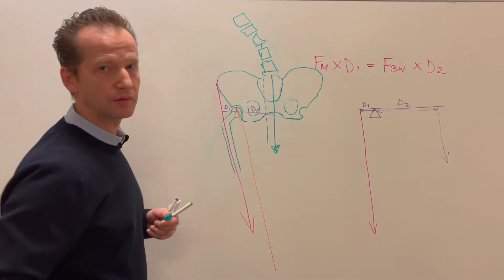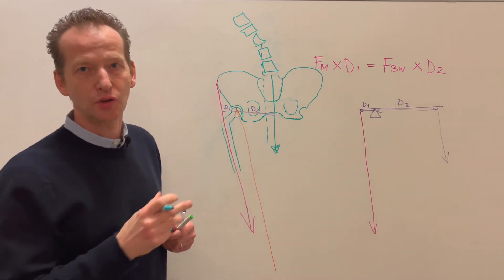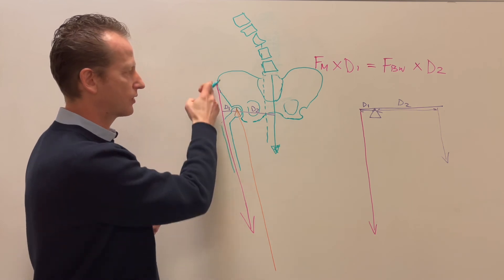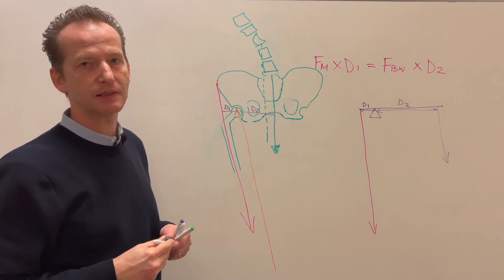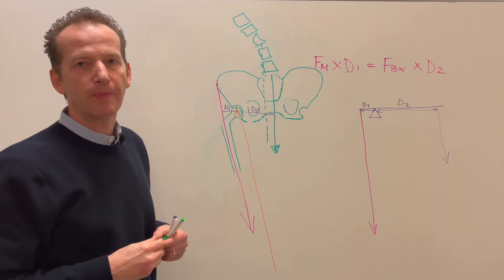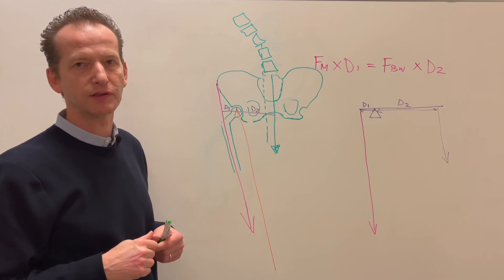A little closer to the joint, creating the D2 moment arm shorter and therefore reducing the requirement for counterbalancing from the muscles, the force generated by muscles, and therefore reducing joint reaction forces, joint compressive forces.